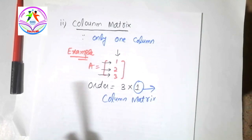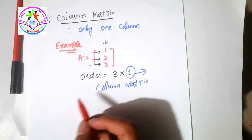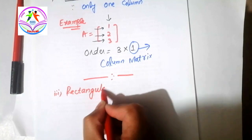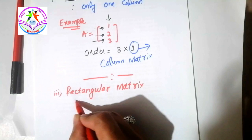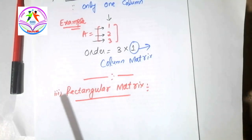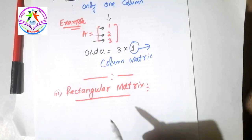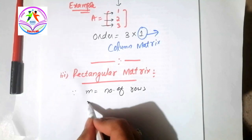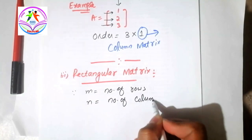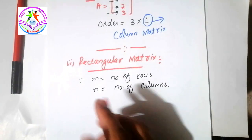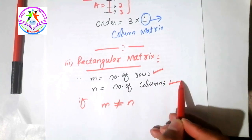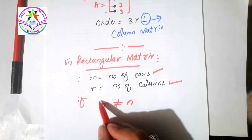Now let's move to another type of matrix called rectangular matrix — that is the third type. A rectangular matrix is defined as: the matrix whose number of rows and columns are not equal to each other is called a rectangular matrix. If we let m equal the number of rows and n equal the number of columns, then if m is not equal to n, we call it a rectangular matrix.